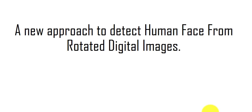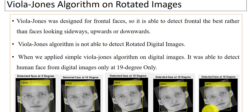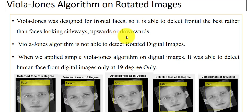In this video, you will see a new approach to detect human faces from rotated digital images. As we all know about the Viola-Jones algorithm — using this algorithm we can easily detect frontal faces, as it was designed for frontal faces. So using this, we can easily detect frontal faces as compared to faces looking sideways, apart, or downwards. In this video, we want to detect the human face from rotated digital images.